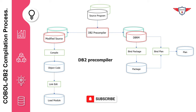One important point regarding the DBRM: it is always kept as a member of a partitioned data set and is given the name of the program. It also includes a consistency token to distinguish it from other DBRMs derived from other versions of the program. There are two ways of binding a program: first, to a package, and second, directly into an application plan. This depends on the project, and my recommendation is to follow the project guidelines, as they are designed based on experience and standards.